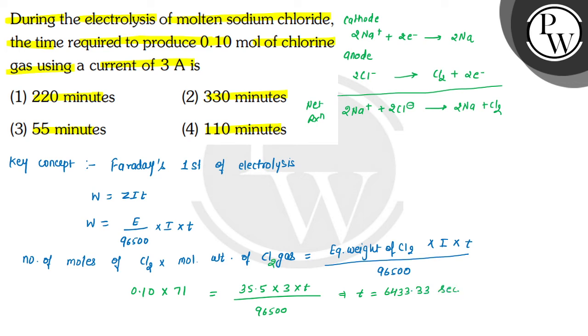We have options in minutes so we will calculate this value in minutes. In minutes we have 60 seconds, so if this value is 6433.33 divided by 60, this value is in minutes. So this will be approximately 107.2 minutes. But here in this question the approximate value is given so approximately we can write it is 110 minutes.